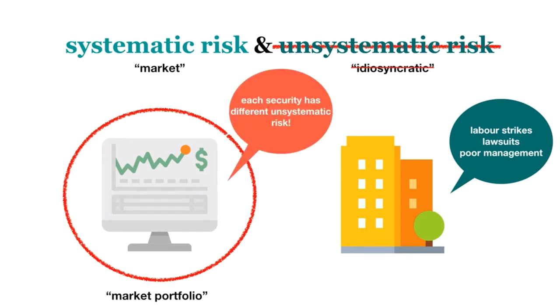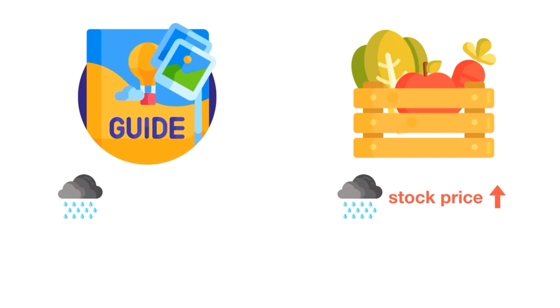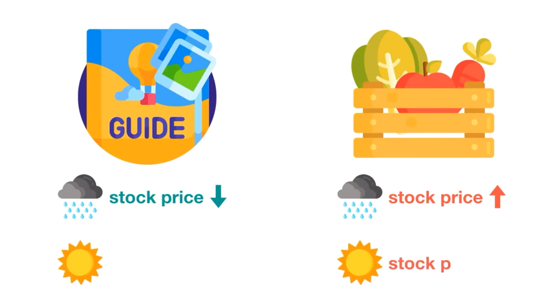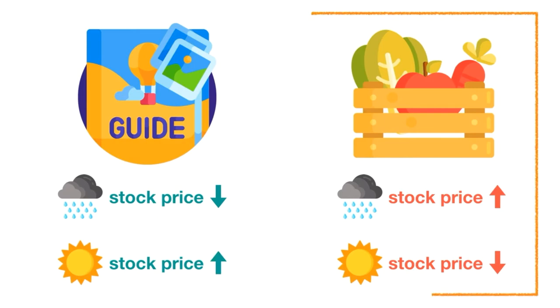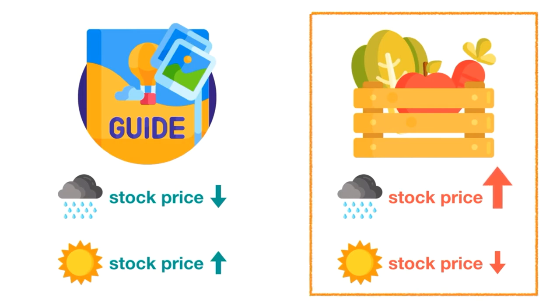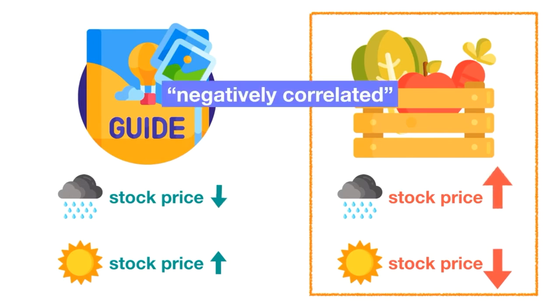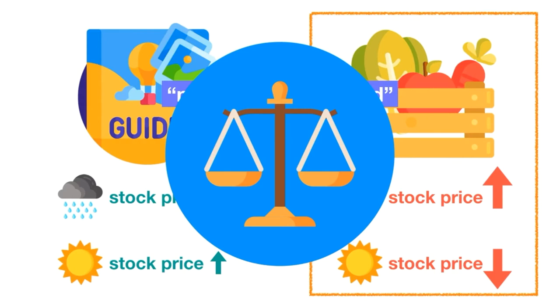Why? Because every security has different unsystematic risks. We can illustrate this using a portfolio with only two stocks — one in a tourism company and the other in a farming company. In rainy years, the farmer's crops flourish and his stock price goes up, while the tourism company's stock price suffers, as nobody wants to tour in the rain. In dry years, the farmer's crops suffer, but the tourism business is booming. If you held only farm stocks, you would get an especially high return in the rainy years and an especially low return in the dry years. These two securities are negatively correlated, so as one goes up, the other goes down. One's bad performance will be balanced out by the other's good performance, leaving the portfolio of the two stocks rather stable. This leads to less variance in your total returns and therefore lower risk to you as an investor.